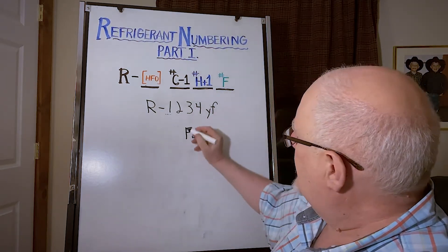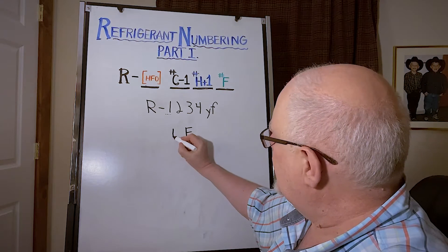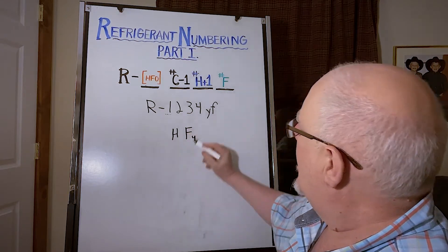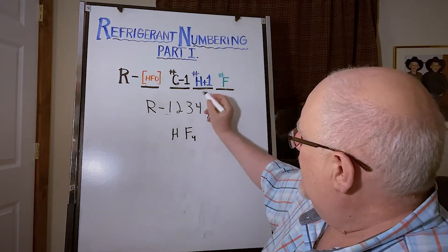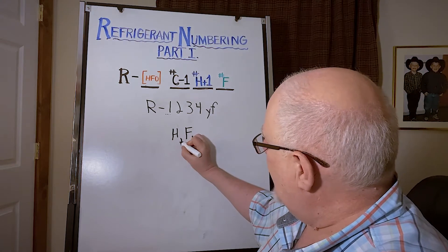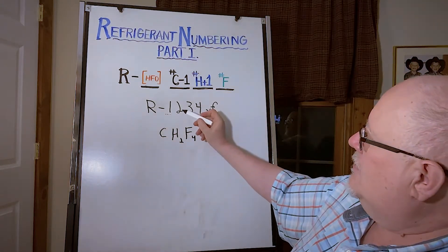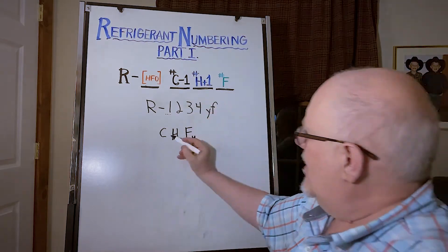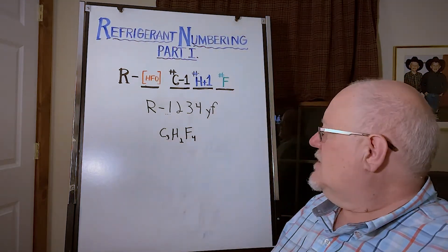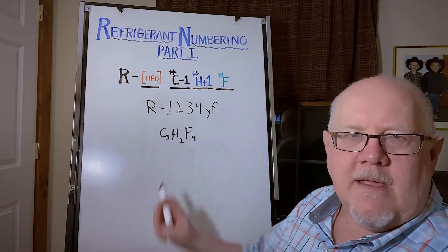We know it's an HFO because it has a one out here from that digit. But working from right to left, we have four fluorines, and the number of hydrogens is going to be three minus one, so it's going to be two hydrogens. Carbons, we have a two, we know that's one less than the actual number which will be C3. So we have tetrafluoropropene.